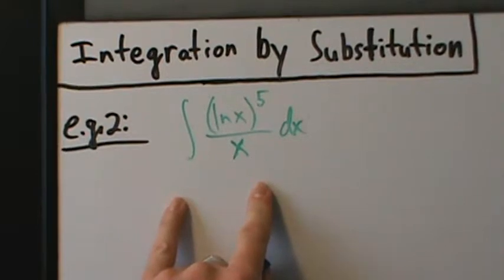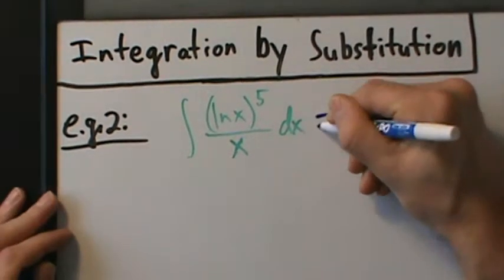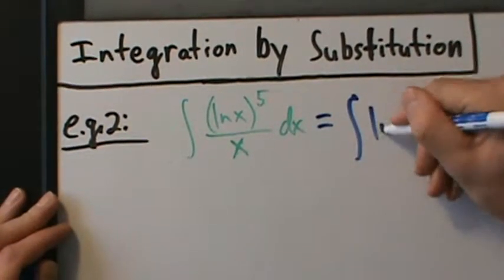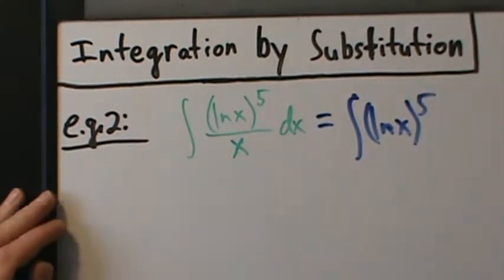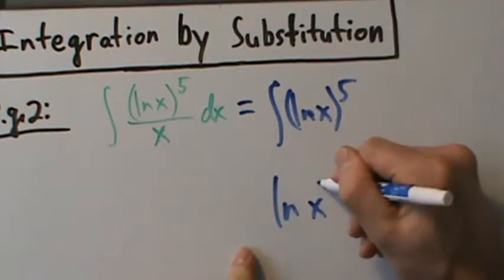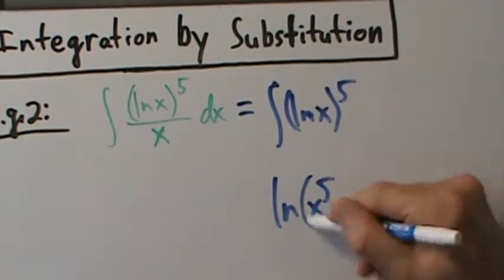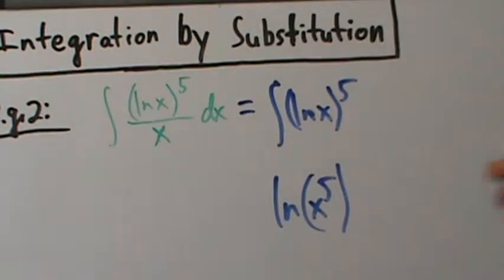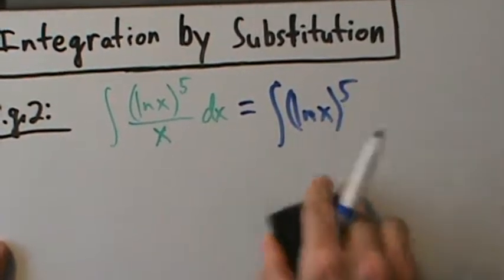We do want to integrate this using substitution. Let's go ahead and rewrite this as the integral of natural log of x, to the fifth. We really do need these parentheses, because without the parentheses we're saying something completely different. So watch out for that — we do need these parentheses here.